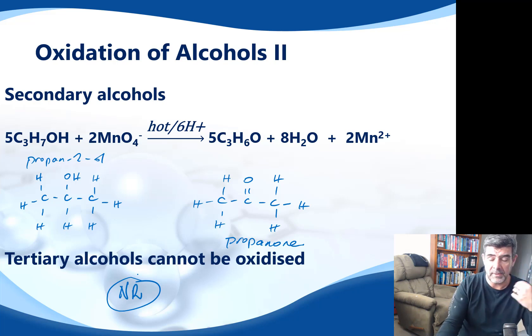One final thing, the permanganate ion is the one that I've chosen. The dichromate ion could quite easily have been chosen as well. It's an orange solution and it too will discolor or change color as the reaction proceeds if oxidation is occurring. So these are the equations that describe how alcohols behave, primary, secondary, and tertiary alcohols behave in the reaction of oxidation.